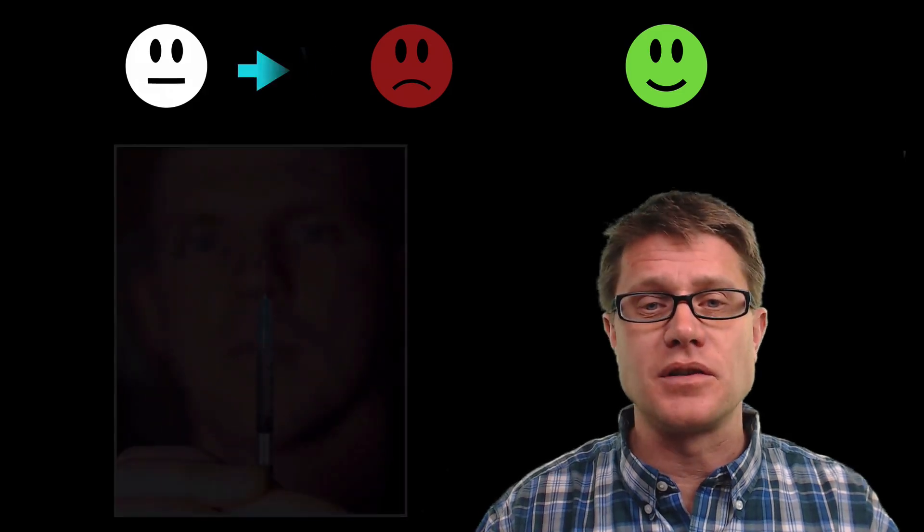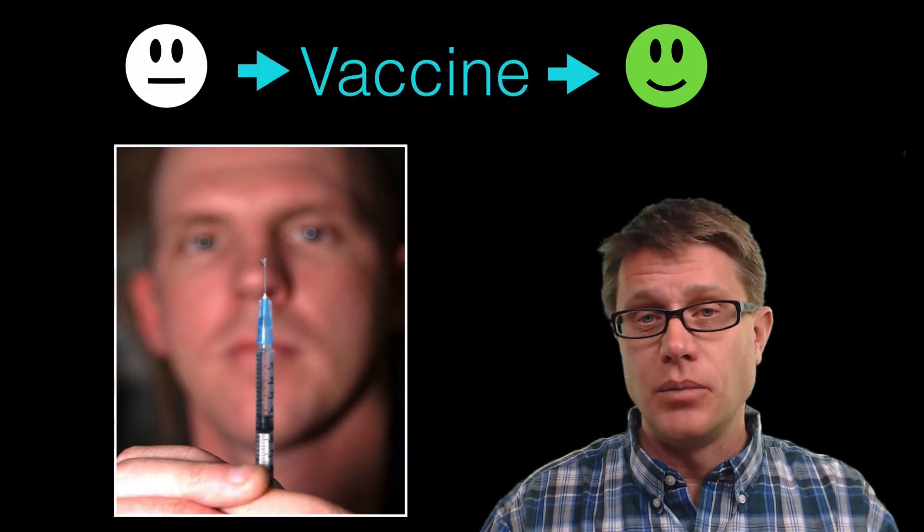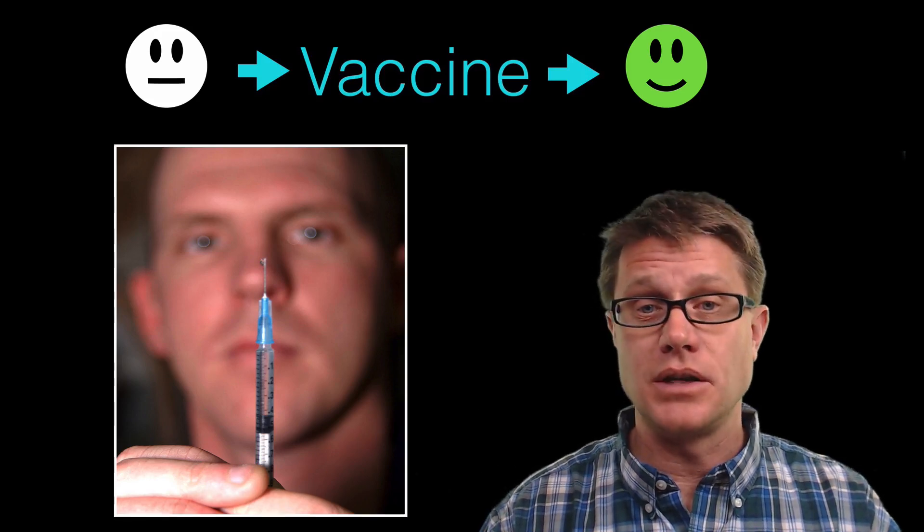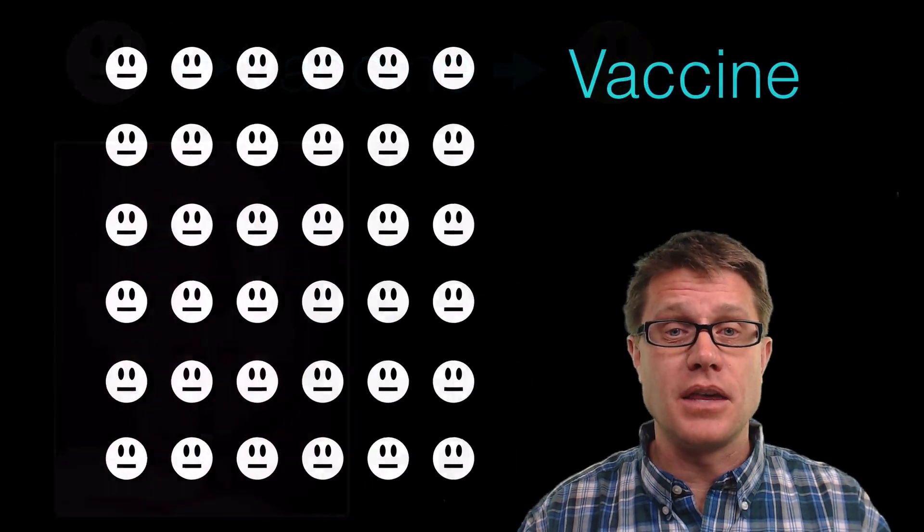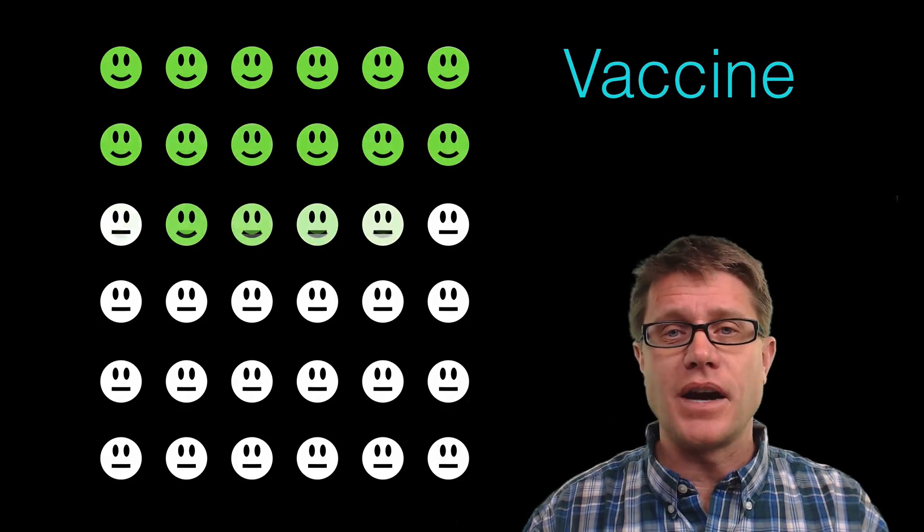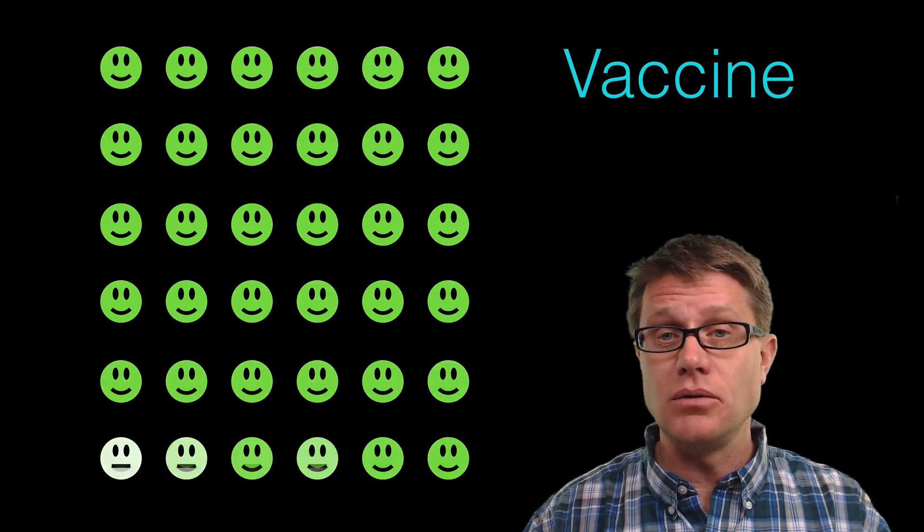But science has come up with a solution to that. It's called the vaccine. We give you a weakened or a dead version of that disease and then you can gain immunity to it. And so that's wonderful. And you might think let's go back to that model again. Let's simply vaccinate everybody. If we vaccinate everybody, everybody has immunity.